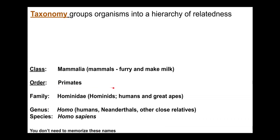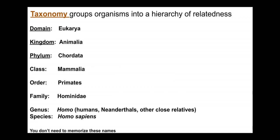Above family, we have order. Humans, chimps, monkeys, and lemurs are all in the order Primates. Above order is class. We are all mammals — all primates, monkeys, cats, dogs — furry and making milk — are all in the class Mammalia. And then on up, we are all chordates. All chordates are animals. All animals are Eukarya. We can see the idea of the nested hierarchy here.